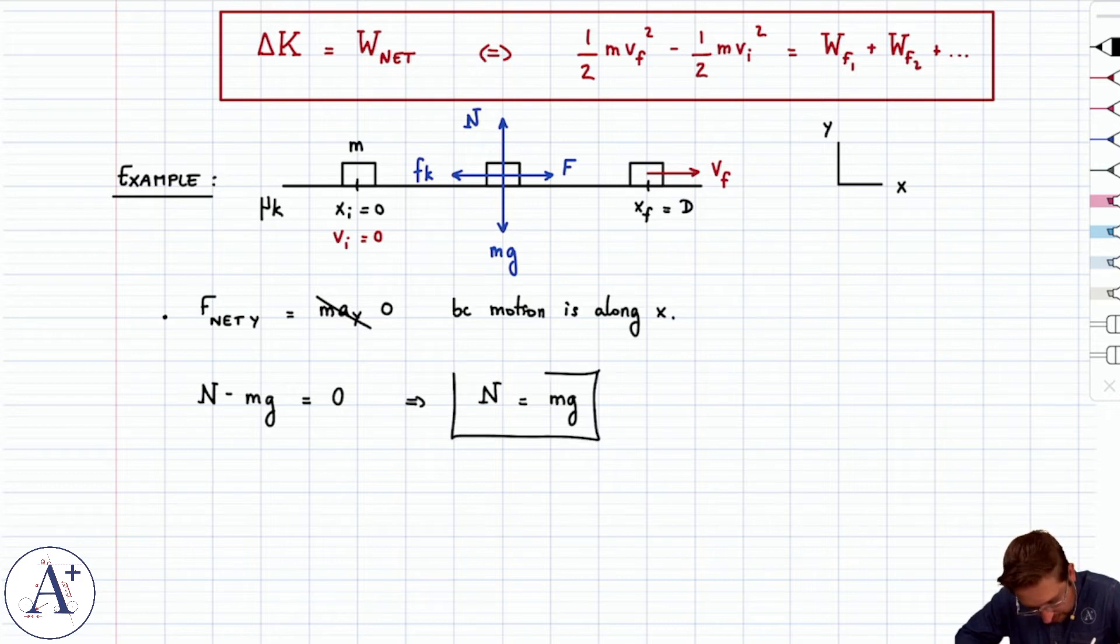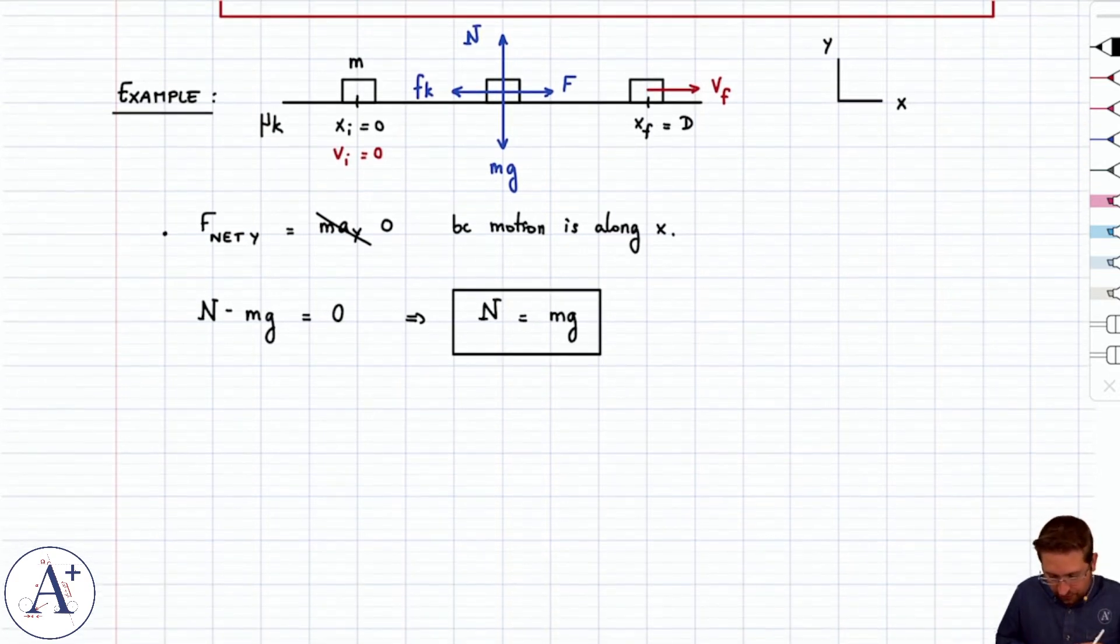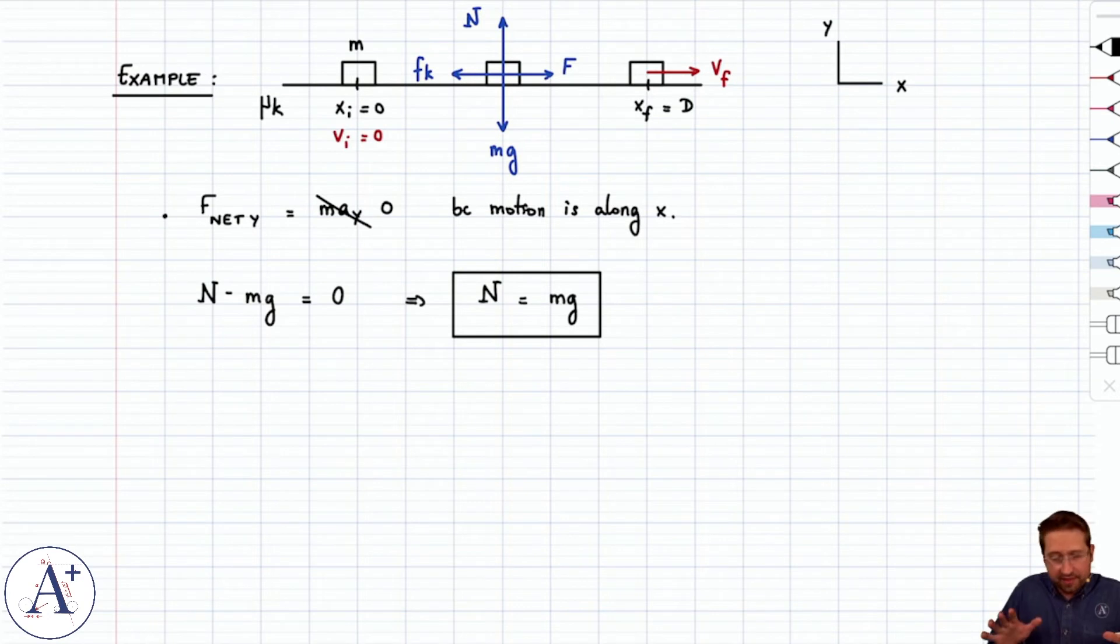which again is just luck. There's no reason why we should believe that n is always equal to mg. In this particular case though it is. So, okay, fair enough. That was that. That has nothing to do with work kinetic energy theorem.